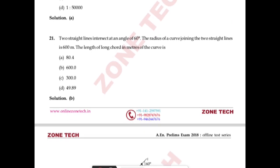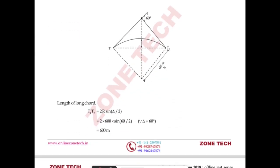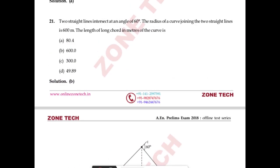Question number 21: two straight lines intersect at an angle of 60°. The radius of the curve joining the two straight lines is 600 m. Find the long chord length. Long chord = 2R × sin(Δ/2). With Δ = 60° and R = 600 m, the value gives T1T2 = 600 m. Answer: B.